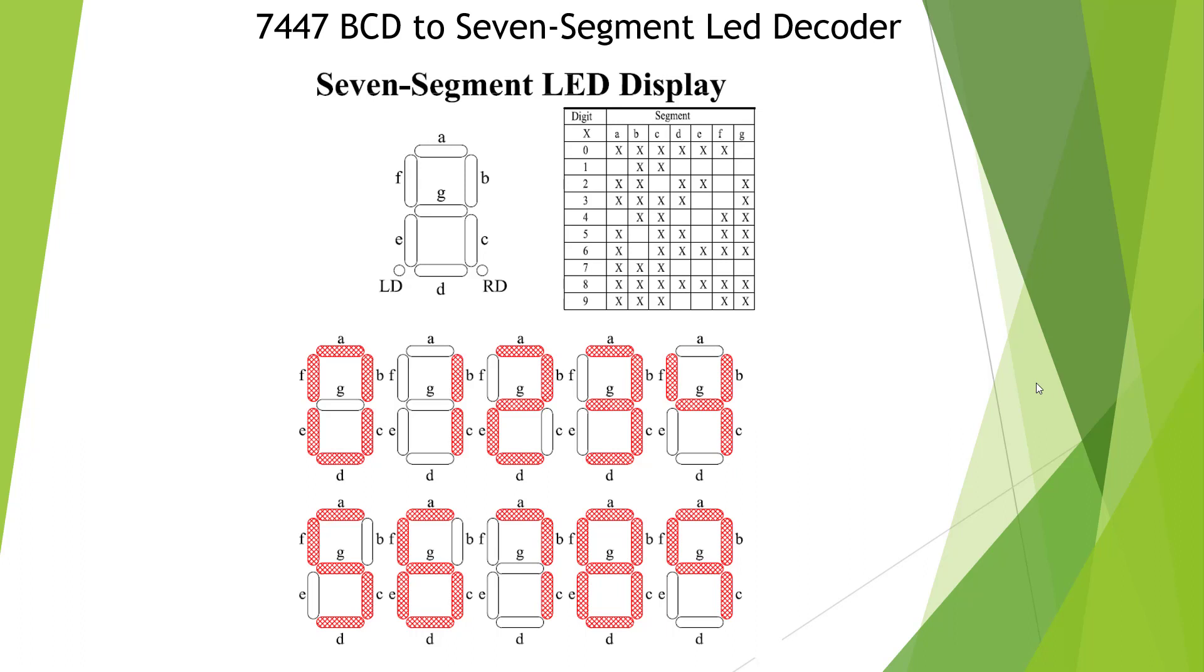This here is the display of 7 segments. They have 7 LED segments, and they're labeled A, B, C, D, E, F, and G. So it goes clockwise, the F, and then we have G.